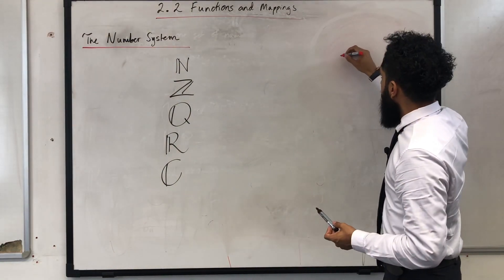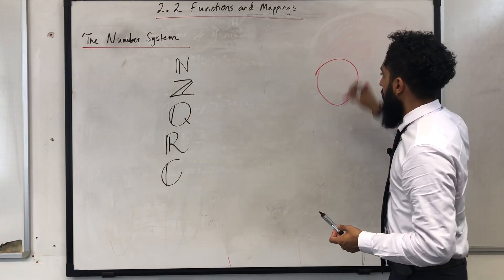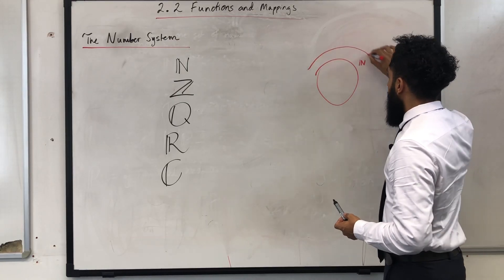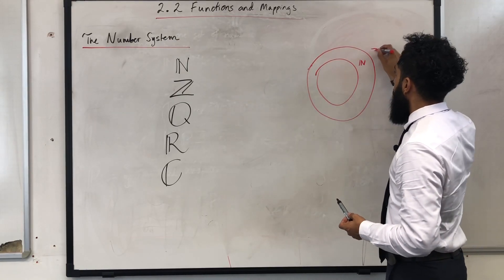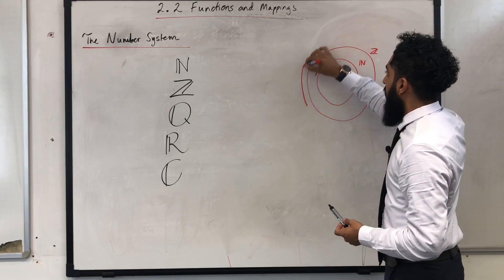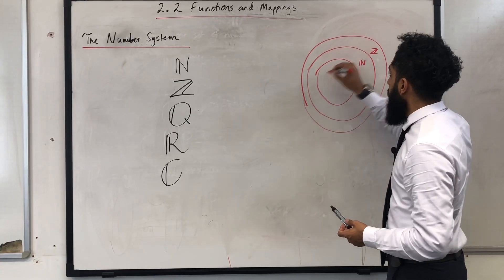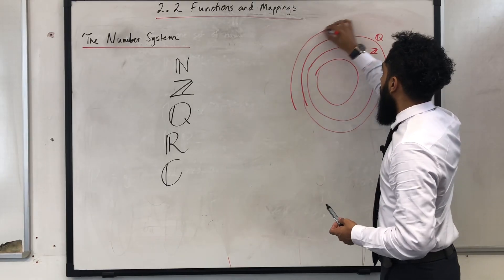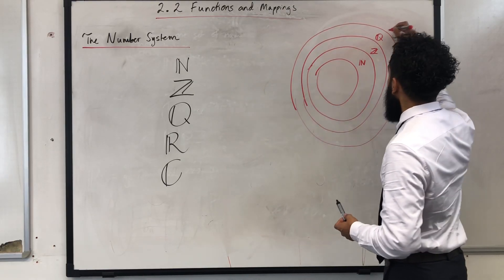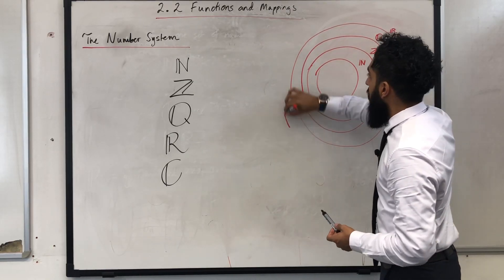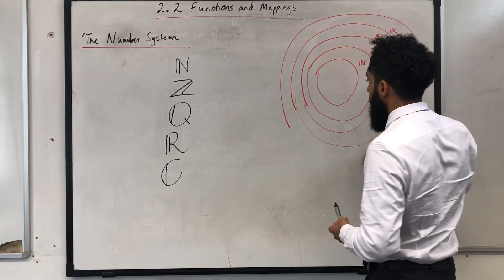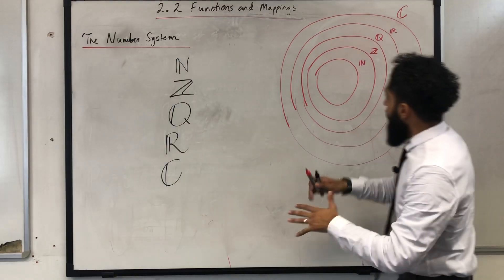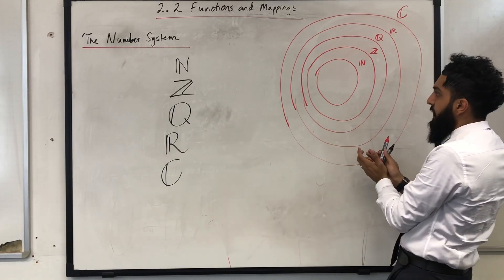Let's draw a diagram of the number systems. The smallest is the set of natural numbers, then we have the set of integers, after which we have the set of rational numbers, then the set of real numbers, and finally the largest number system, which is the set of complex numbers.